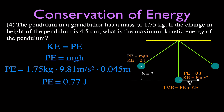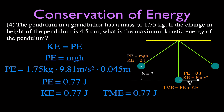When the pendulum swings through to the bottom, the potential energy at the top equals the kinetic energy at the bottom — that's where maximum kinetic energy occurs. So the maximum kinetic energy is also 0.77 joules. The total mechanical energy, which is always the sum of both, also equals 0.77 joules anywhere in the swing.